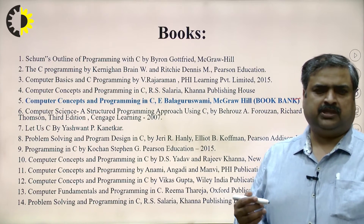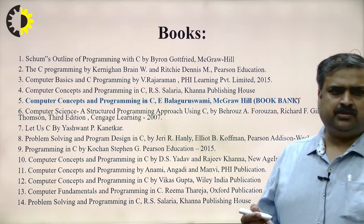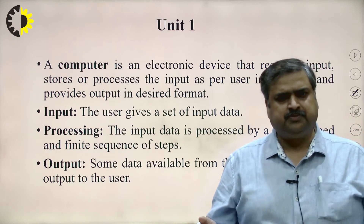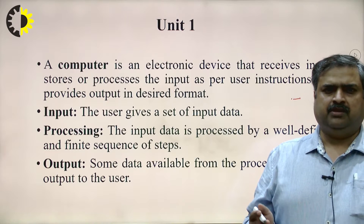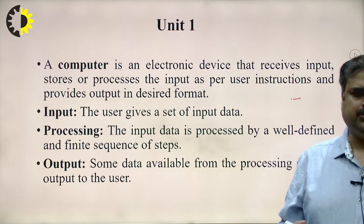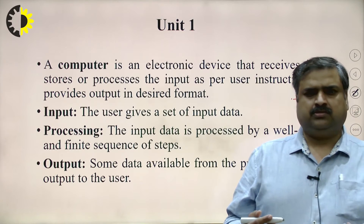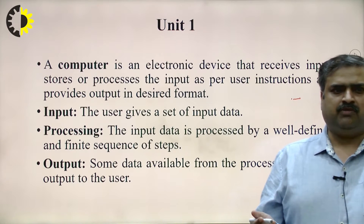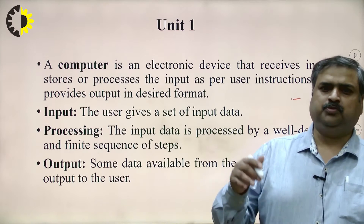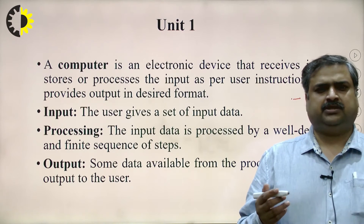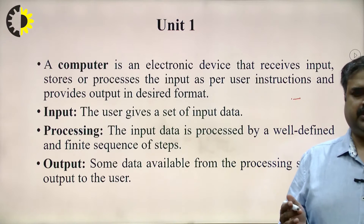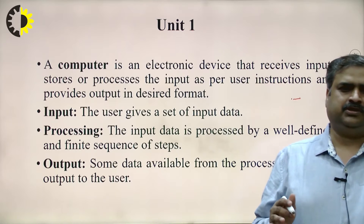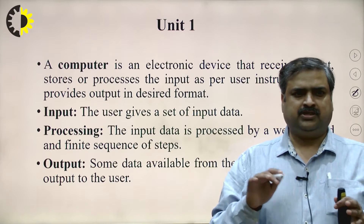These are some books recommended by the university that you can follow. A computer is basically an electronic device which receives input from the user, stores and processes that input as per given instructions, and provides the desired output in the desired format. This is the basic job of a computer, but it is not as simple as it looks in the definition because lots of work is done during the processing part.